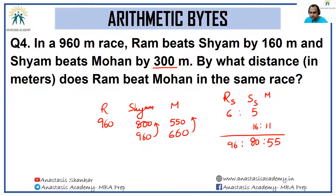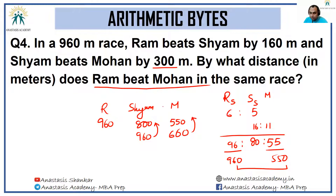When you combine these ratios you get 96:80:55. So when Ram is running 960 meters, Mohan will run 550 meters. The difference between them is 410 meters, and that will be your answer.